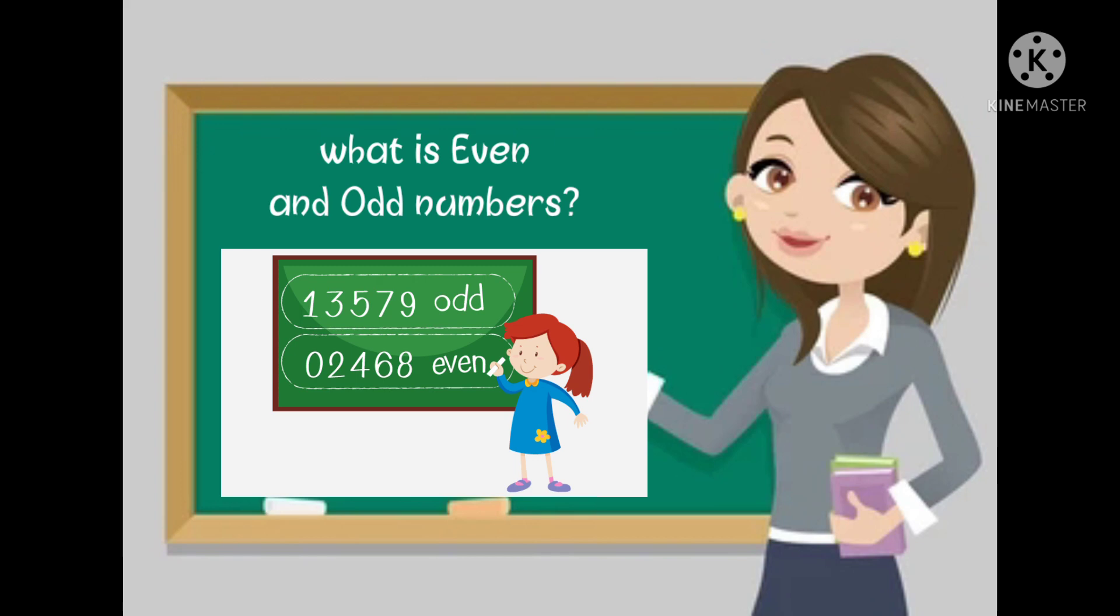What is even and odd numbers? Odd numbers start from 1, 3, 5, 7, and 9. Even numbers start from 0, 2, 4, 6, and 8.